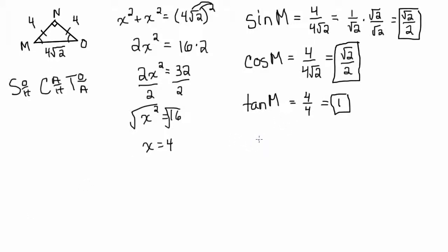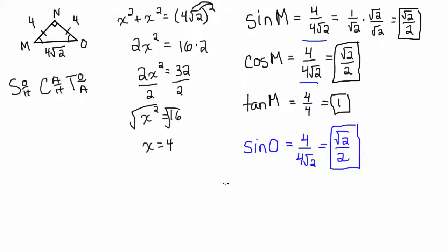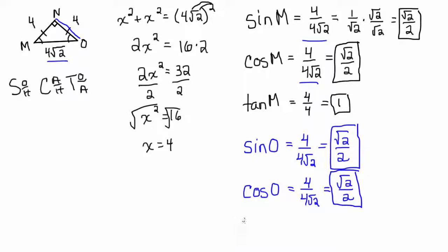You can probably see what's going to happen with angle O. The sine of angle O is opposite over hypotenuse: 4 over 4 root 2, which you recognize simplifies to root 2 over 2. The cosine is adjacent over hypotenuse: 4 over 4 root 2, which again simplifies to root 2 over 2. And the tangent of angle O is opposite over adjacent: 4 over 4, which equals 1.